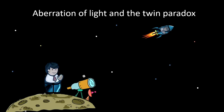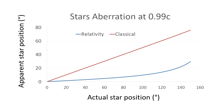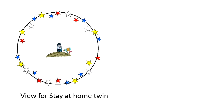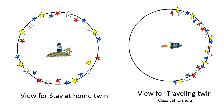Nobody ever talks about aberration of light effects. If we look at this chart, we'll see that for an observer moving at 99% the speed of light, the universe will look different than for the observer not moving. While for the stay-at-home twin the universe will have stars in every direction, for the traveling twin all the stars will appear to be ahead, as the image on the right shows. The traveling twin can just look out the window of the ship and will know that he is the one traveling and experiencing time dilation effects.